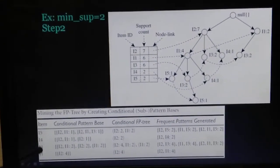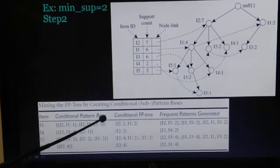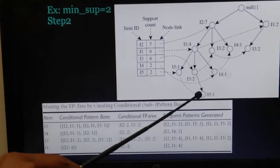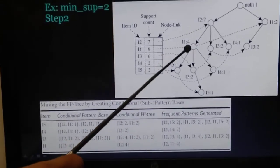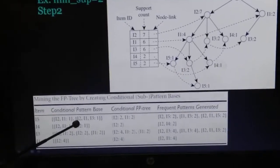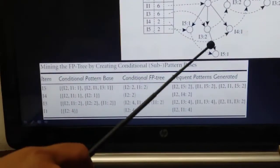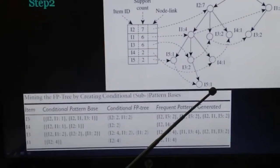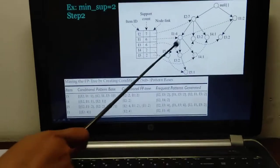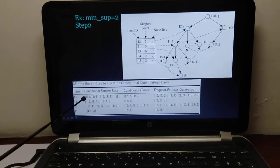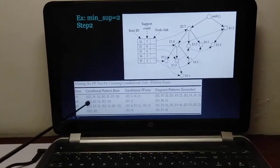Let's look at I5. We find the paths that lead to I5 in the FP tree. One path is I2, I1, I3 with support 1, and the other path is I2, I1 with support 1. These two paths form the conditional pattern base for I5: {I2, I1, I3: 1} and {I2, I1: 1}.